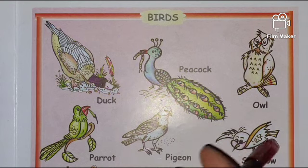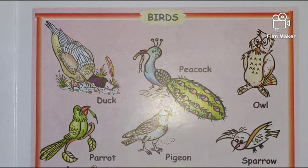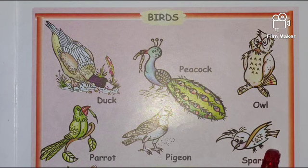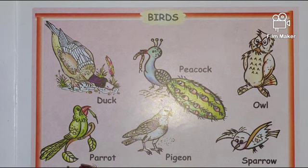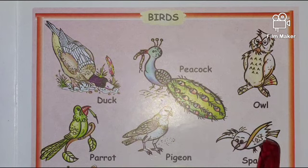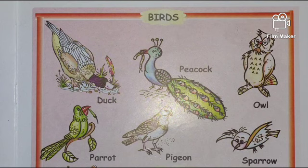Next bird is sparrow. Which bird? This is sparrow. Sparrow को हिंदी में बोलते हैं गौरया। क्या बोलते हैं हम? गौरया। Repeat: say parrot — it means तोता। Pigeon — it means कबूतर। And sparrow — it means गौरया.